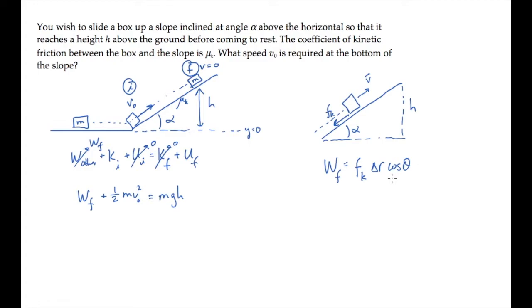In this case, the angle theta is 180 degrees, so cosine of that is negative one. Next, we can rewrite the friction force as mu sub k times n, the normal force, and delta r, the distance traveled, as the length of this vector shown here.